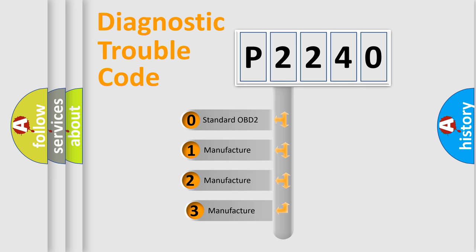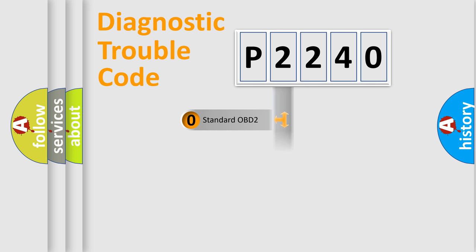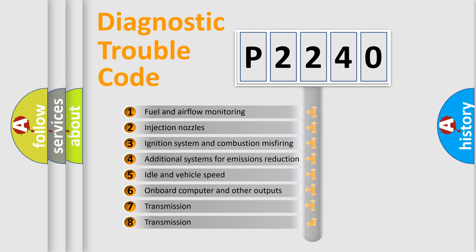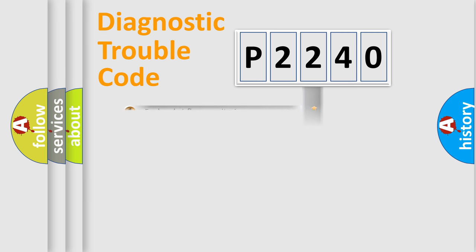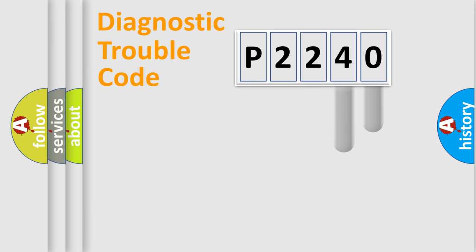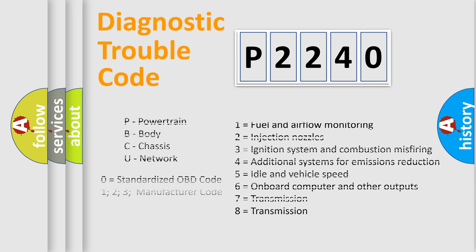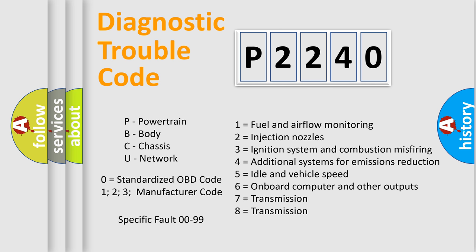If the second character is expressed as zero, it is a standardized error. In the case of numbers 1, 2, or 3, it is a more specific expression of a car-specific error. The third character specifies a subset of errors. This distribution is valid only for the standardized DTC code. Only the last two characters define the specific fault of the group, and this division is valid only if the second character code is expressed by the number zero.